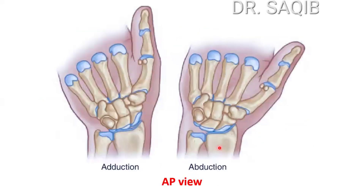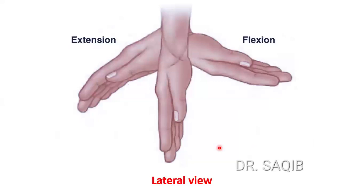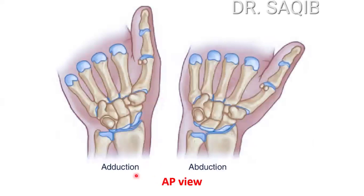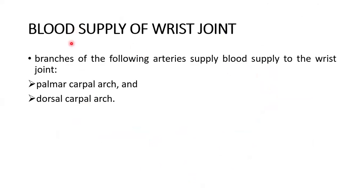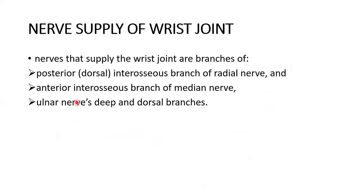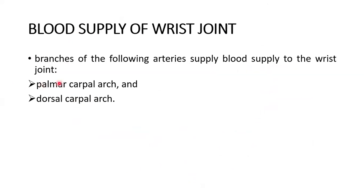Here you can see again extension, flexion from the midline, adduction, and abduction. Blood is supplied to the wrist joint by branches of the palmar carpal arch and the dorsal carpal arch.